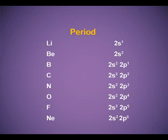Let me give you one example of a period — the second period, from lithium to neon. Lithium: valence shell configuration 2s1. Beryllium (atomic number 4): 2s2. Boron (atomic number 5): 2s2, 2p1. Carbon: 2s2, 2p2. Nitrogen: 2s2, 2p3. Oxygen: 2s2, 2p4. Fluorine: 2s2, 2p5. Neon: 2s2, 2p6.